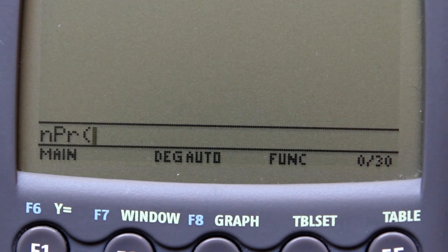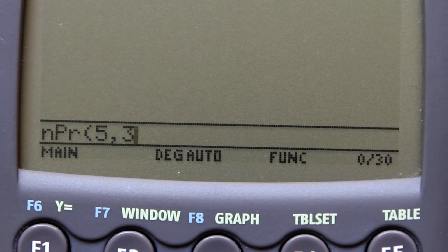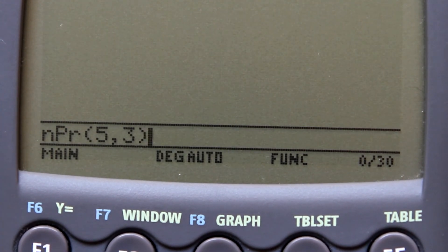Enter the n variable, which is 5, enter a comma, and enter the r variable, which is 3. Now put a closed parenthesis.